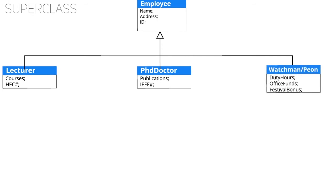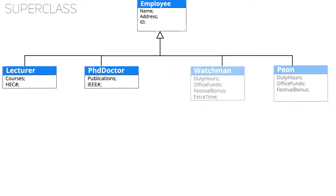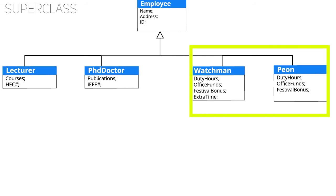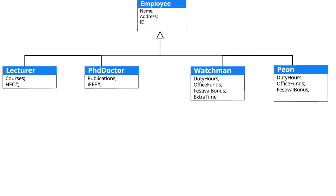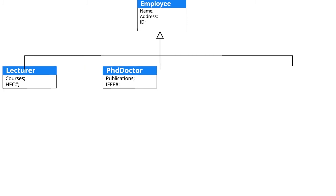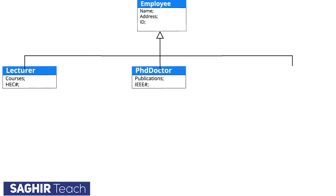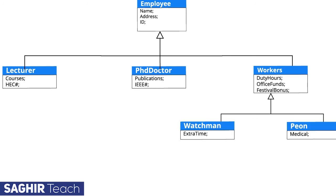If two classes contain exactly the same properties, combine them into one to reduce the complexity of the program. If most of the properties of two classes match — for example, watchman and peon share three properties, but watchman has an extra property of overtime and peon has medical facilities — then the similar properties are combined into one class, and subclasses are made for the different properties.